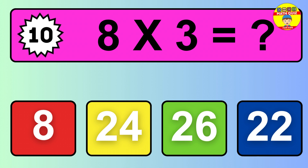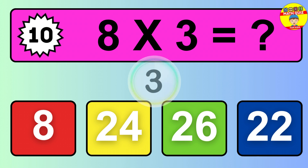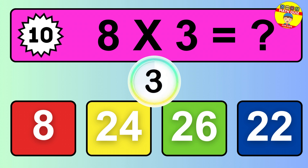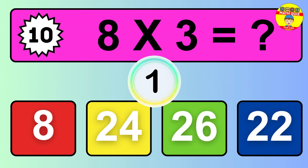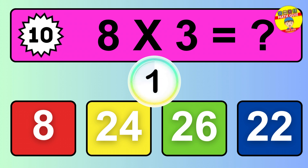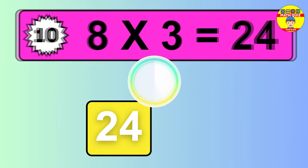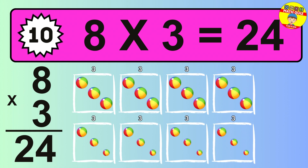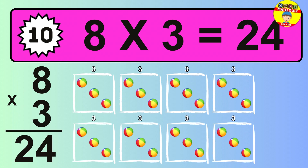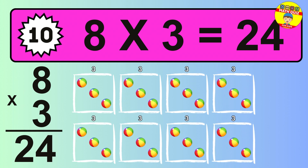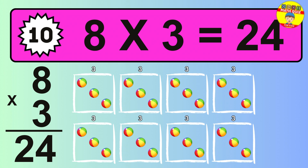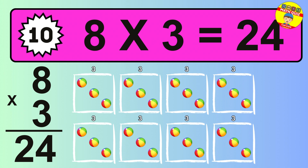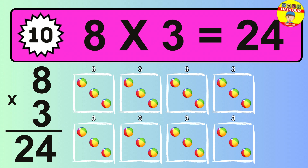Question 10. 8 times 3 equals what? The answer is 8 times 3 is 24. To calculate, we have 8 groups with 3 balls each one. So how many balls do we have? 24 balls.